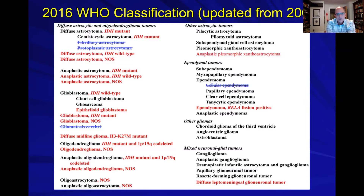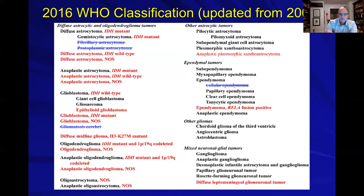The best way to define gliomas is to look at the World Health Organization's classification scheme. In 2016 there was an update from about 10 years prior — you can see the red additions here with lots of changes. If you step back, you'll see that the most common additions in red are genetic mutations. For the very first time, we are now using genomic data to really define and classify gliomas.